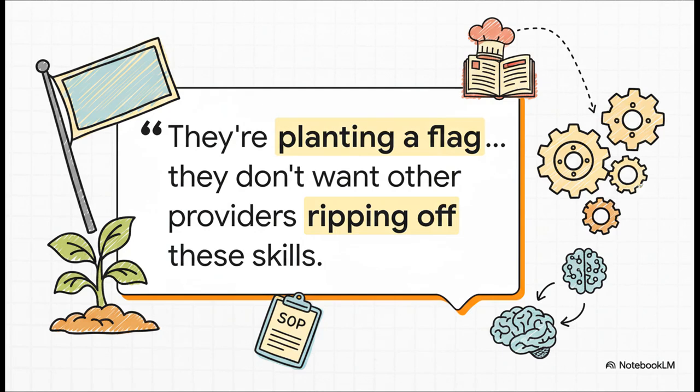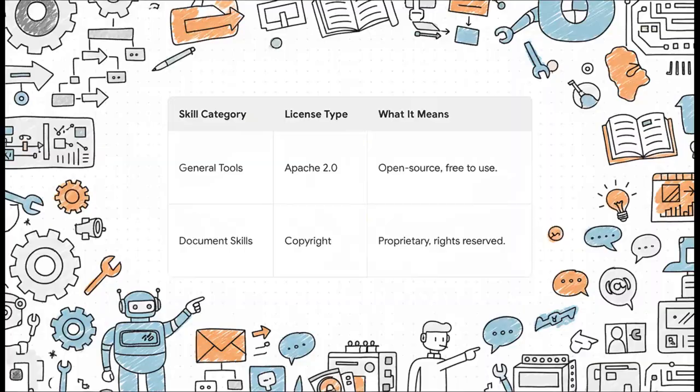And that brings us to a really fascinating strategic piece of this puzzle. As you start digging into the skills that are already out there, you need to pay close attention to the licensing. Seriously, because it tells you a ton about the competitive landscape and where these AI platforms are headed. So you'll notice that not all skills are created equal. The basic stuff, like that skill creator we talked about, that's open source, free for everyone.